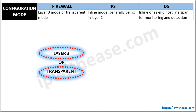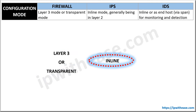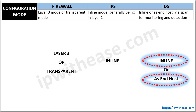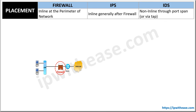In terms of configuration mode, a firewall is configured in inline layer 3 mode or transparent mode. In layer 3 mode, separate network segments need to be carved out and architectural changes are required. However, transparent mode is simpler to implement with no significant network changes, although there are some associated limitations. IPS always has to be in inline mode, while IDS can be either in inline mode or span/tap mode.